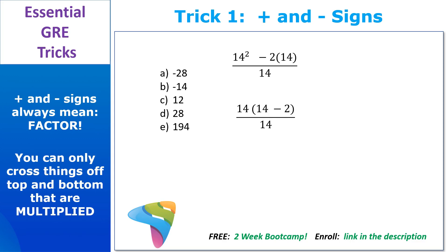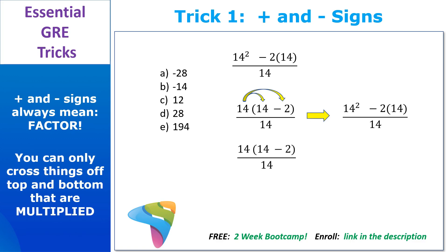So factor the 14 out to the left and put what's left over inside the parentheses. You know you've done this right if you can multiply the 14 back through the parentheses and get back to where you started. We don't want to change the value of anything — we just want to rewrite it. Because just like magic, that 14 isn't added to anything anymore; it's multiplied. So we get to cross it off, and we can say this was, in fact, the stupidest way in the world to write 12. C is your right answer.